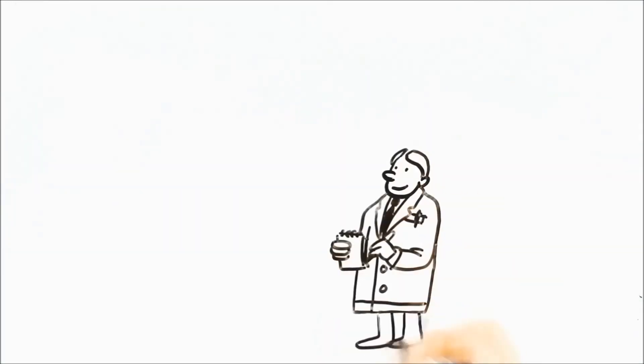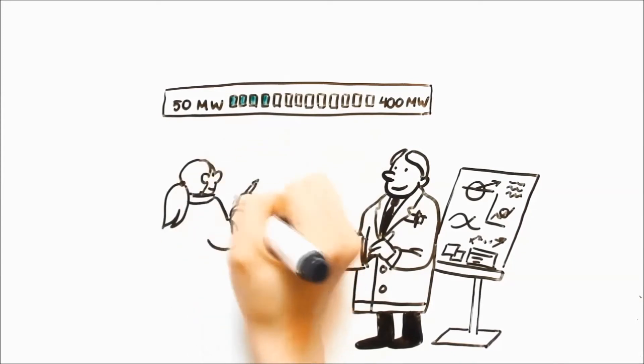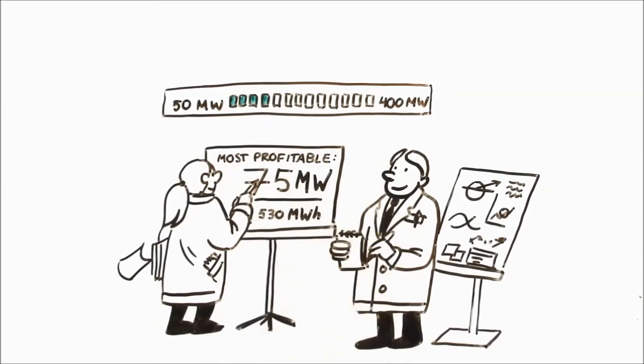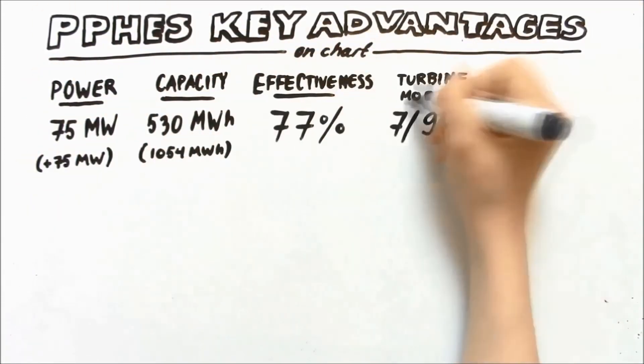Based on the economic analysis and market modeling, 75 megawatt electric power and 530 megawatt hour capacity would be the most profitable. Installed capacity from 50 megawatts to 400 megawatts has been studied. Here are Pyhäjärvi pumped hydro energy storage key advantages on chart.